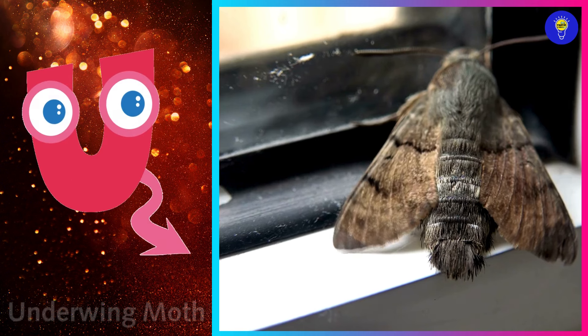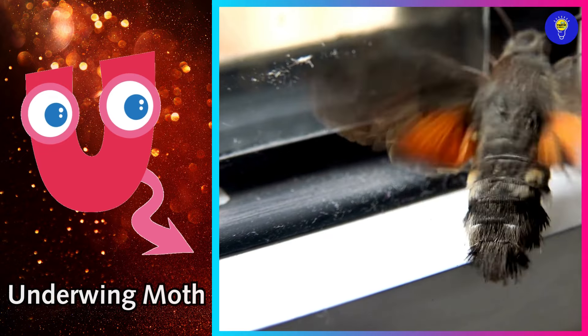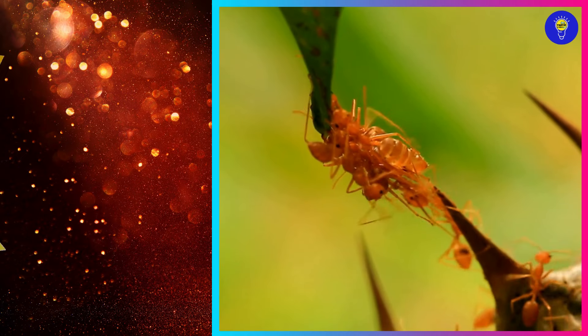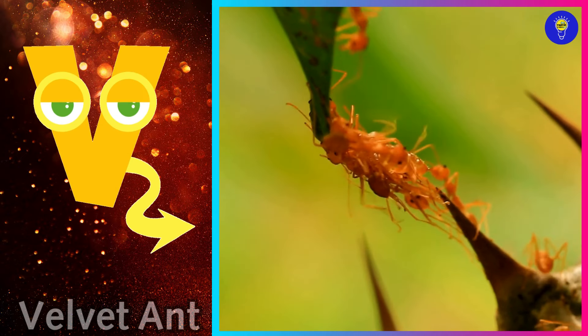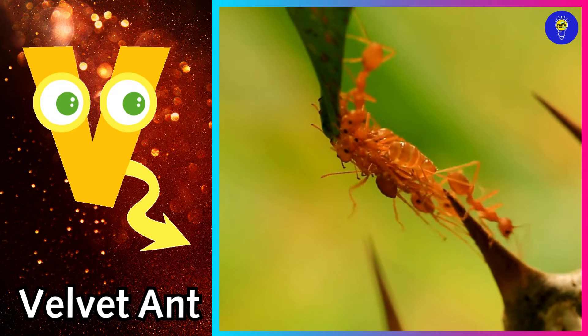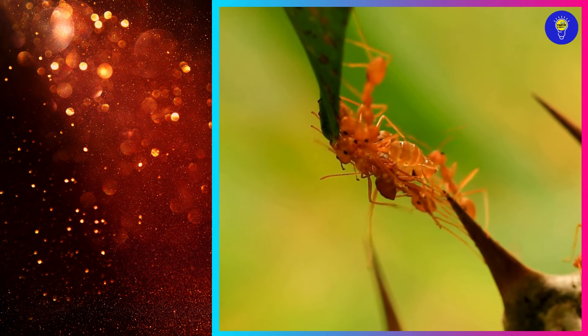U is for underwing moth. U, underwing moth. V is for velvet ant. V, velvet ant.